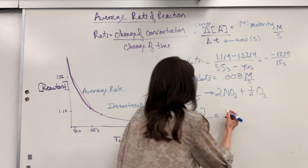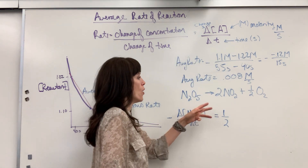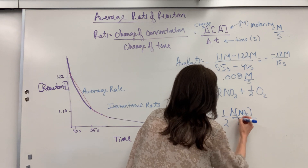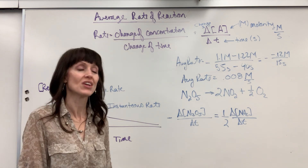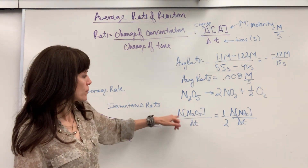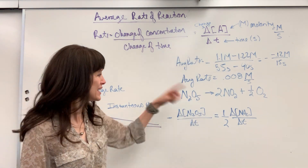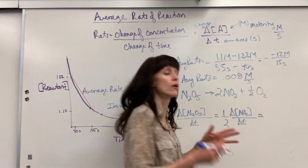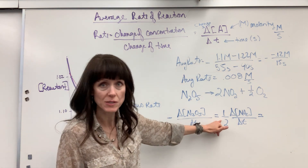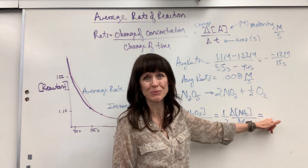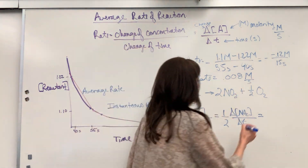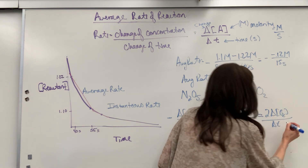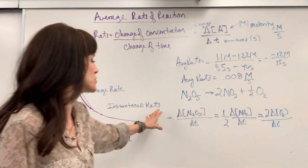The rate at which N2O5 is consumed equals the rates that the products are being formed when I reciprocate their coefficients. So this equals one-half times the change of concentration of NO2 divided by change of time — take that 2 and reciprocate it. The rate at which N2O5 is consumed equals one-half the rate at which NO2 is being produced. And that also equals 2 times the change of concentration of O2 divided by change of time. So we have this relationship between all three species.